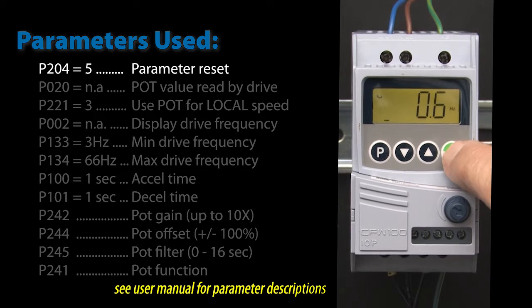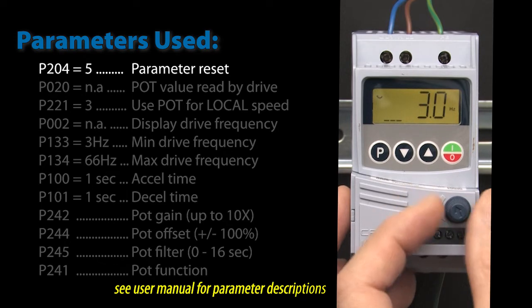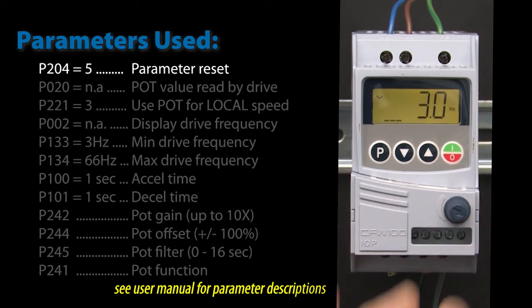Hit run. The motor starts spinning at the drive's default 3 Hz which is in parameter 133. If I rotate the potentiometer, the motor speed didn't change.